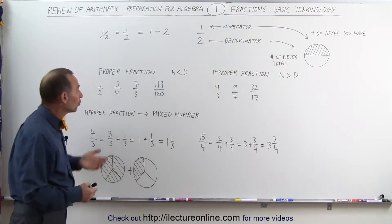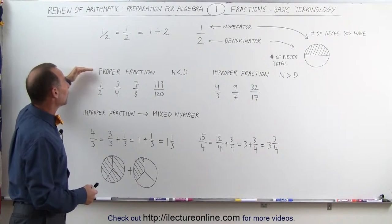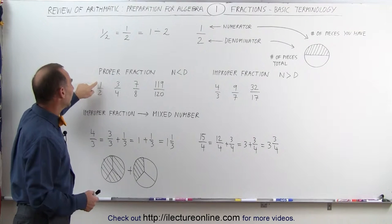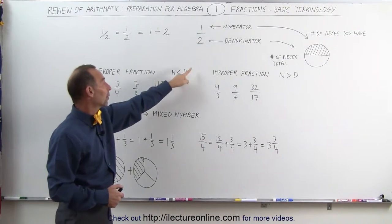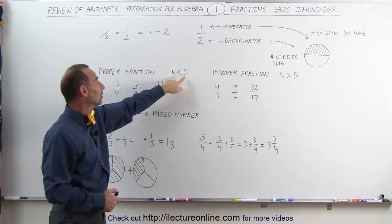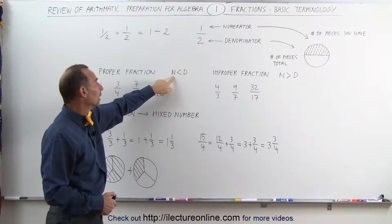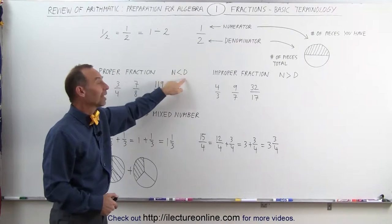There's different kinds of fractions. There's what we call proper fractions. A proper fraction is a fraction that has a numerator that is smaller than the denominator. This is the symbolism that we use, n for numerator, d for denominator. And the numerator is smaller than or less than the denominator.